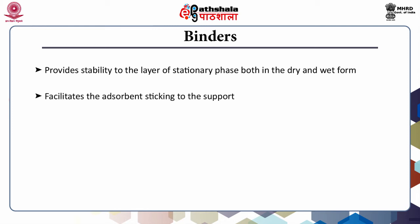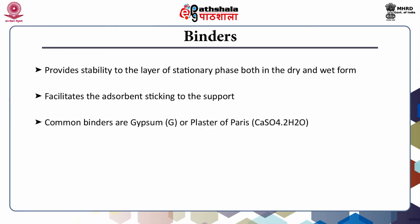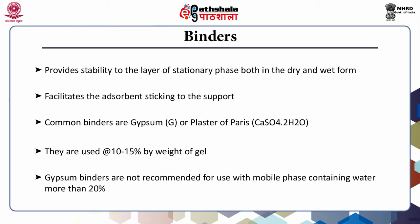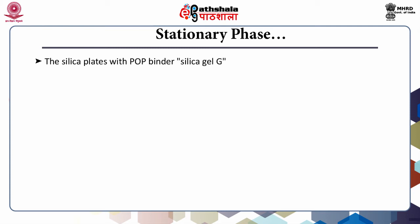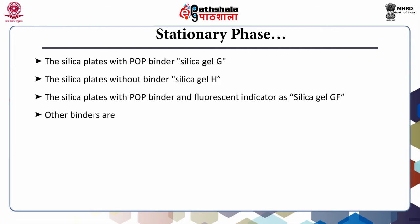Binders facilitate the adsorbent sticking to the support. Common binders used are gypsum and plaster of Paris, at a concentration of 10 to 15 percent by weight of gel. However, due to the high solubility of gypsum binder in aqueous solution, they are not recommended for use with mobile phases containing more than 20 percent water. Silica plates with plaster of Paris binder are denoted as silica gel G, while those without binder are denoted as silica gel H.